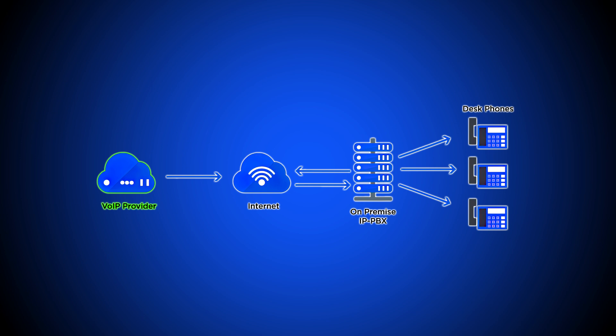An onsite IP PBX system undergoes a similar process to facilitate direct inward dialing. Your VoIP provider receives the PSTN or VoIP transmission and then transmits the digital data to your company's private branch exchange. Once your IP PBX system receives this inbound data, it uses the internet to wirelessly transmit the call to the right user's device.